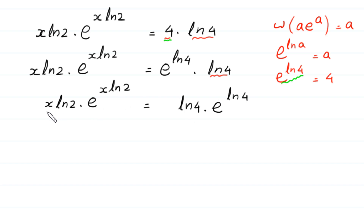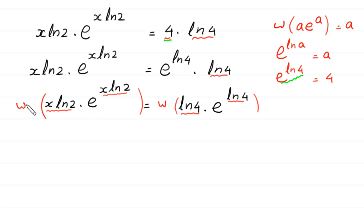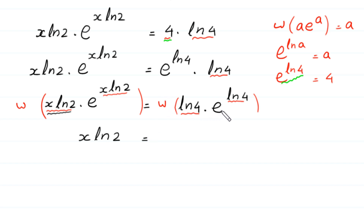Now, at both sides we have matching expressions: on the left, the coefficient and exponent of e are both x · ln 2; on the right, both are ln 4. We apply the Lambert W function to both sides. W((x · ln 2) · e^(x · ln 2)) = x · ln 2, and W(ln 4 · e^(ln 4)) = ln 4. So x · ln 2 = ln 4.